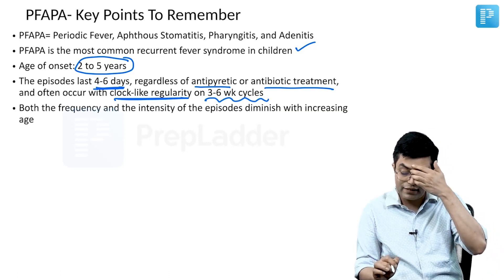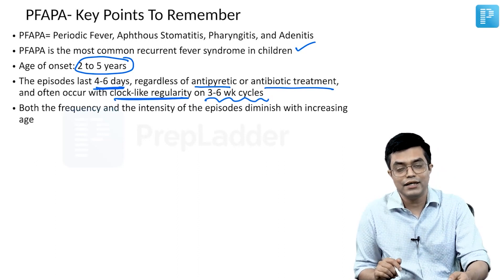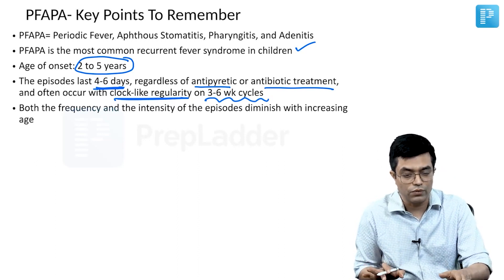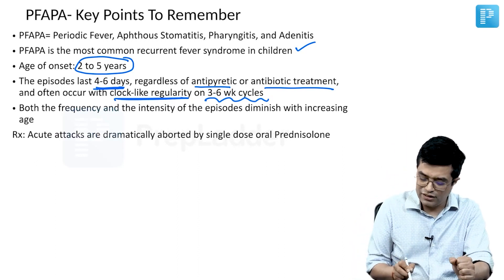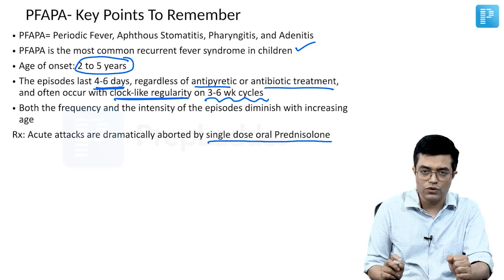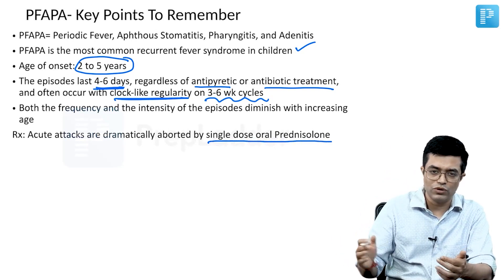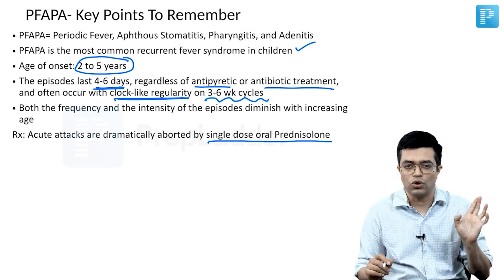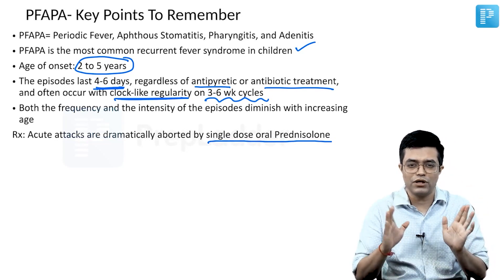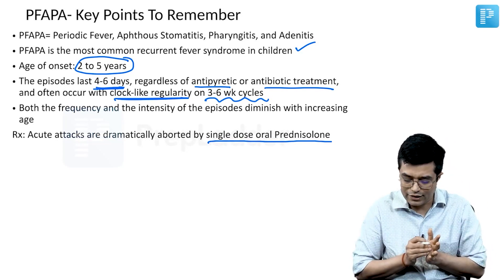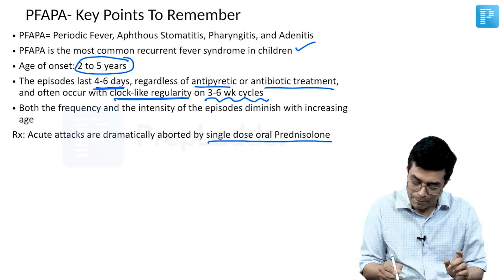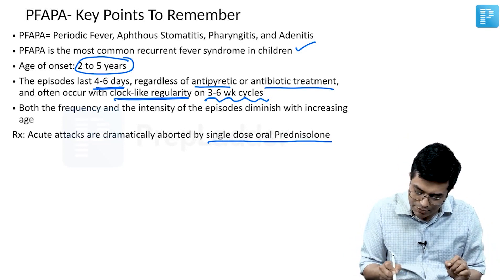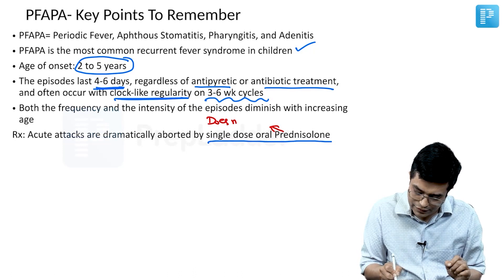As age advances, the frequency and intensity of episodes comes down. Treatment of acute attacks: they are dramatically aborted by a single dose of oral prednisolone as low as 0.5 mg/kg, up to 2 mg/kg. Within 24 to 36 hours the attack will dramatically be aborted. However, prednisolone does not decrease the recurrence risk.